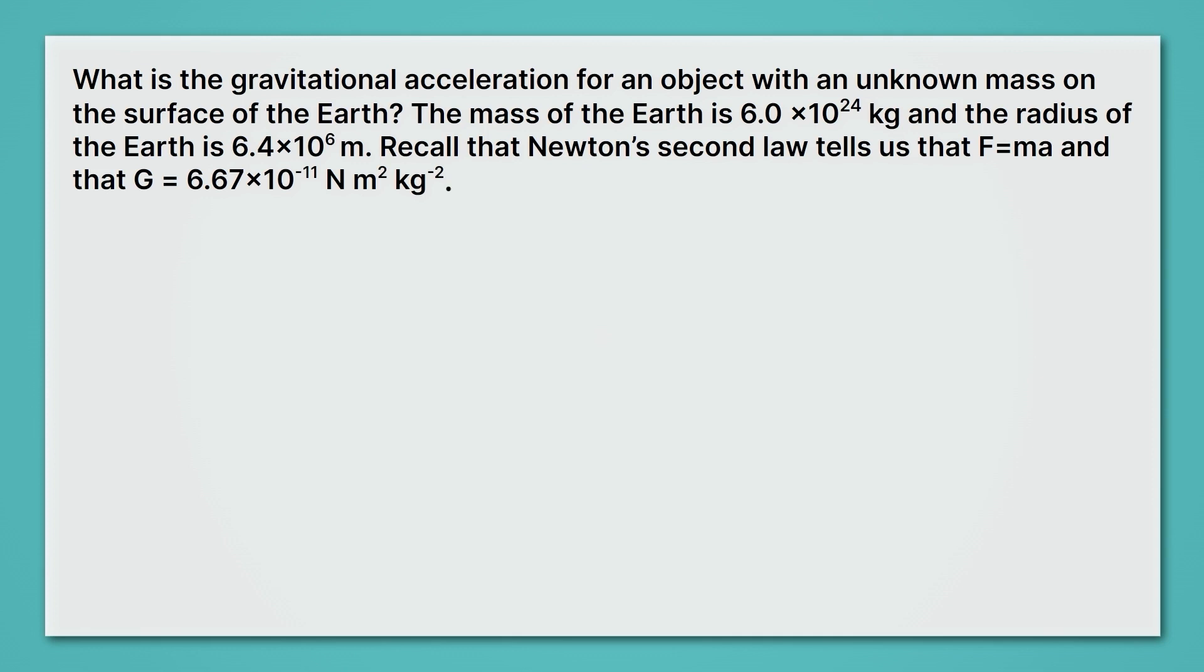The mass of the Earth is 6.0 times 10 to the 24th kilograms, and the radius of the Earth is 6.4 times 10 to the 6th. And then we're told that Newton's law is F equals MA, and we're given big G. Well, we're going to start here by writing down the force of gravitational attraction as big G, M1, M2, all over R squared. And now we're going to recall, as our problem suggests, that force is equal to mass times acceleration.